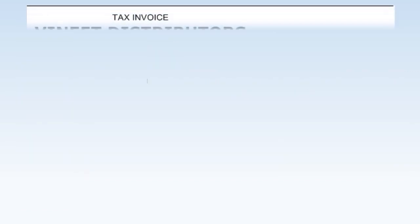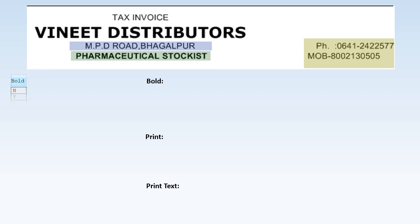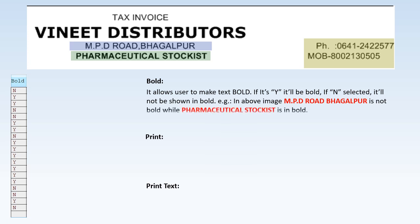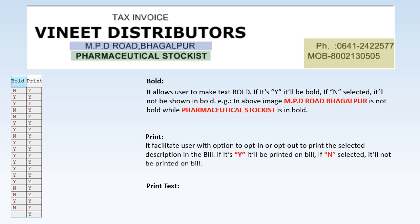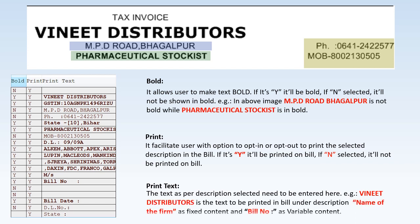The Bold feature allows users to make text bold: if set to Y it will be bold, if N it will not be bold. For example, 'MPD Road Bagelber' is not bold while 'Pharmaceutical Stockist' is bold. The Print feature lets users opt in or out of printing a selected description on the bill — Y to print, N to not print. The Print Text feature is where the text for the selected description is entered, for example 'Venet Distributors' as fixed content for the firm name, or bill number as variable content.